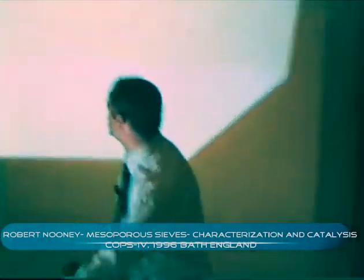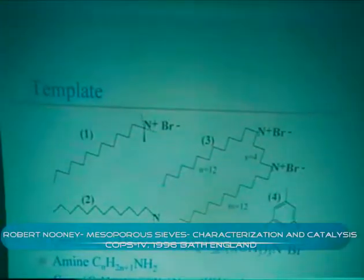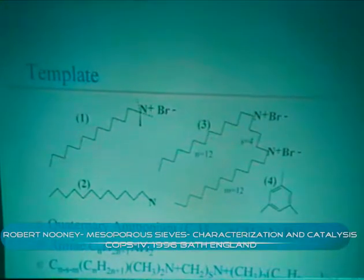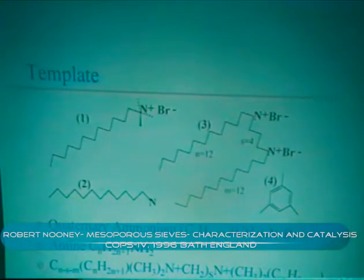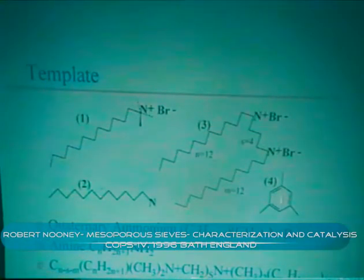There were some discussions this morning on the template. Basically, I'll highlight four different templates. The first one is the quaternary ammonium, which was used in the initial synthesis of MCM-41 by the Mobil researchers. The second one, which we've done a lot of work on, is the amine template, first used by Peter Tannen in 1995. The third is a gemini surfactant, which has two ammonium groups — quite interesting because you can vary parameters and obtain hexagonal, lamellar, and cubic forms of MCM-41. The fourth is mesitylene, an organic compound which you can add to MCM-41 to increment the pore size.